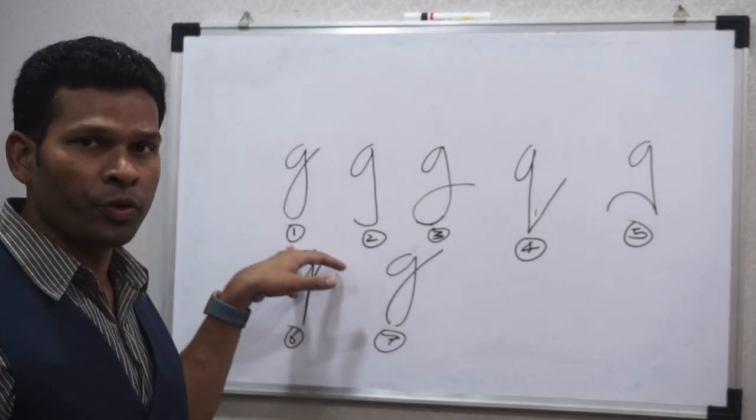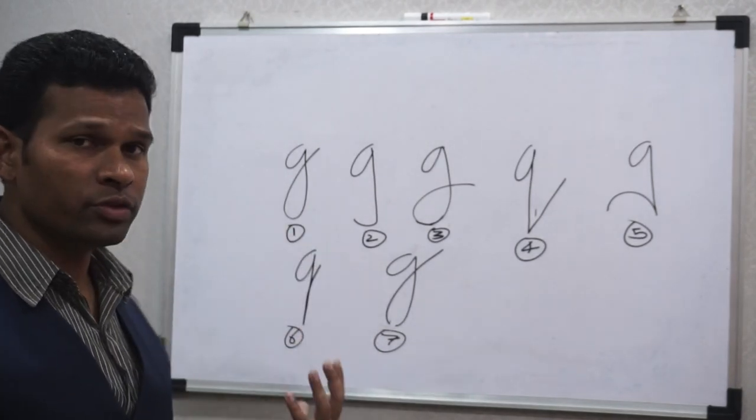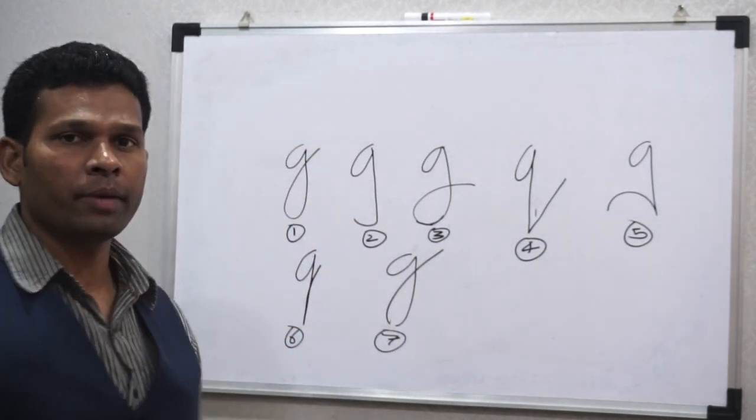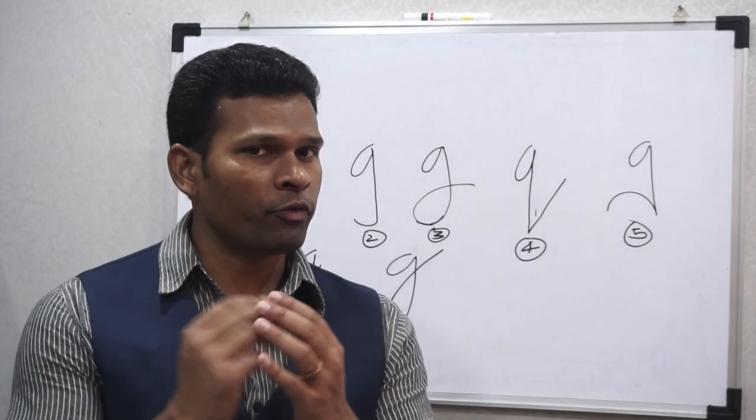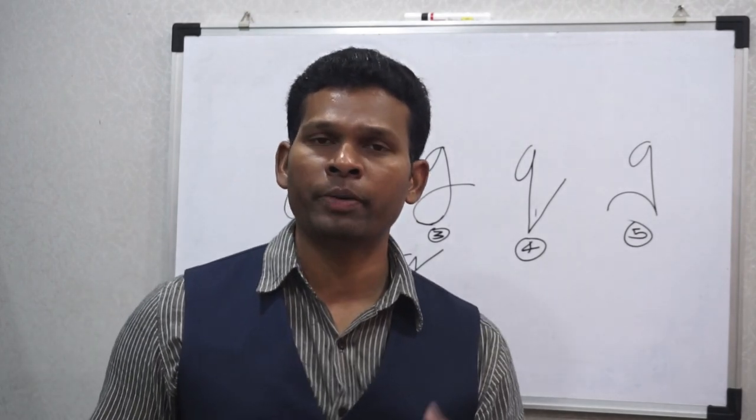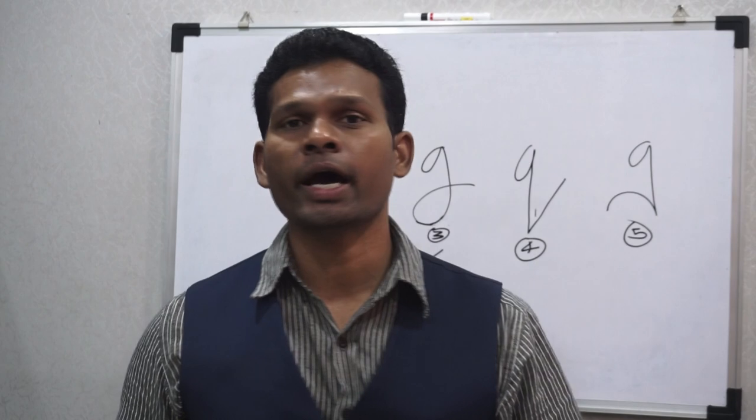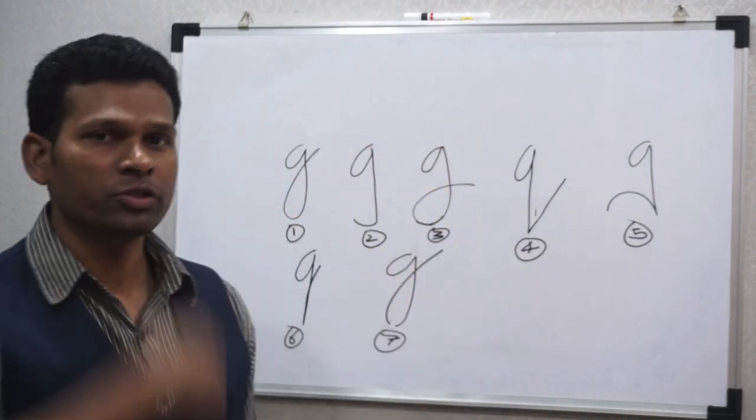You see there is one G over here. Now, if you observe this G, this is where the person is going in the lower zone and coming back. So if you have watched my lower zone video, you might be aware that the lower zone is nothing but the indication of earthly desires and the past. So the first G goes into the past and comes back to the future with the experience of the past.